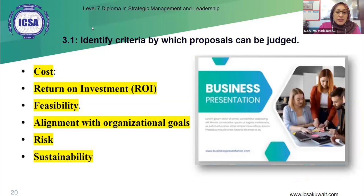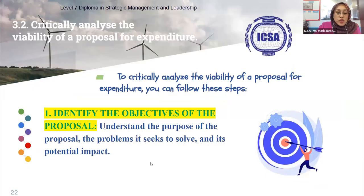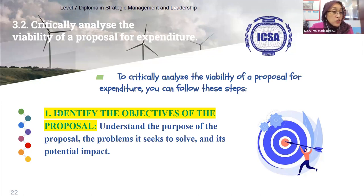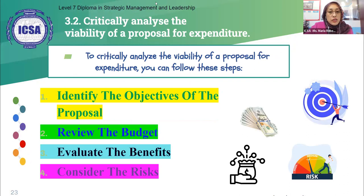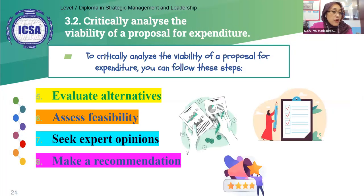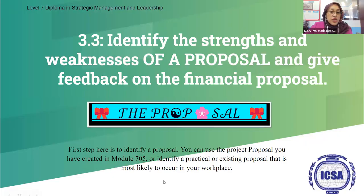Here's a summary of the criteria by which proposals can be judged. To do the evaluation, you need to apply those financial metrics. Moving to task 3.2 — to critically analyze the value of a proposal, you look at the expenditure, identify the objectives and problems the project will solve, review the budget, evaluate benefits using CBA, and consider the risks. This is essentially an elaboration of task 3.1.